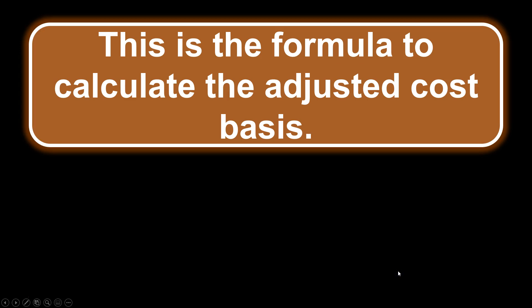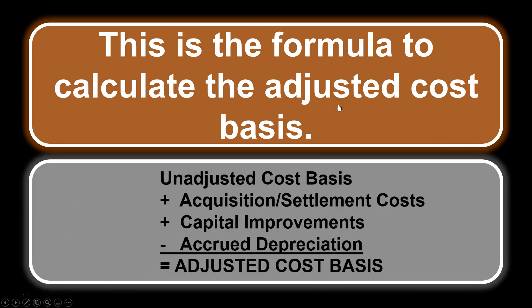This is the formula to calculate the adjusted cost basis. You start with the unadjusted cost basis, then add acquisition and settlement costs, and also add permanent improvements. Then you subtract accrued depreciation. The result is the adjusted cost basis. This is really important to know.